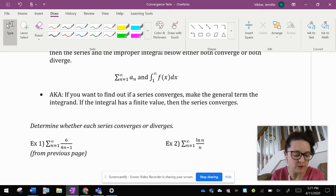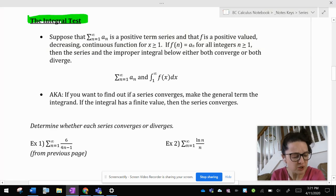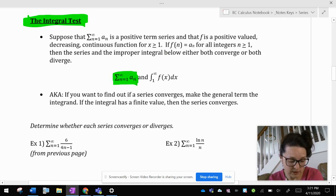One of those is called the integral test. So the integral test says suppose that the summation of a series is a positive term series and that f is a positive value decreasing continuous function for x greater than or equal to 1. If f of n equals a sub n for all integers n greater than or equal to 1, then the series and the improper integral below either both converge or both diverge.